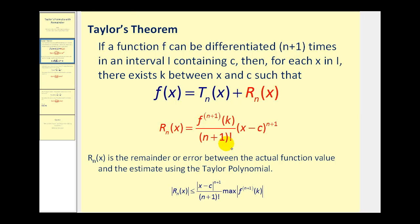Sometimes this function value is very difficult to determine based on the type of function we have. So what we often do is take the absolute value of both sides and state that the absolute value of the remainder is less than or equal to the absolute value of x minus c to the n plus one power divided by n plus one factorial. Instead of using the n plus one-th derivative of f evaluated at k, we have to think about what the maximum value of that function would be, since we cannot determine the exact value.